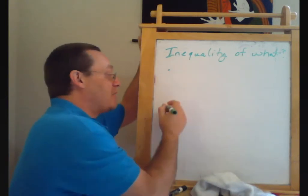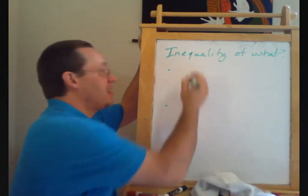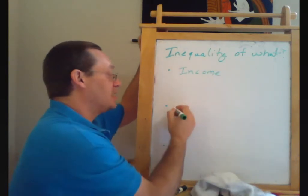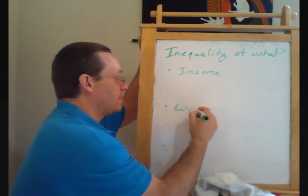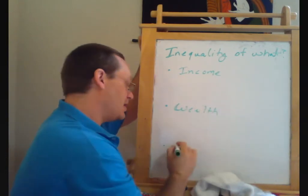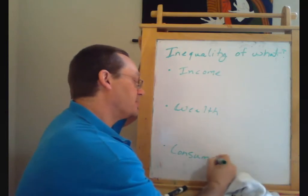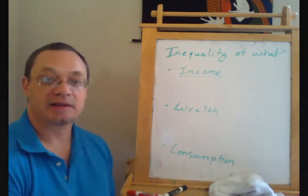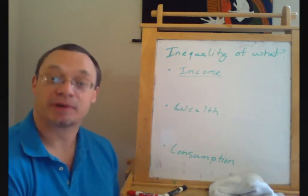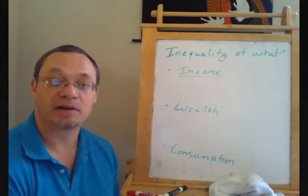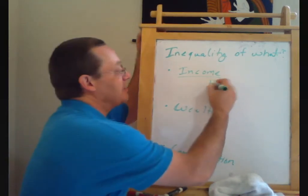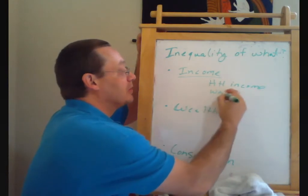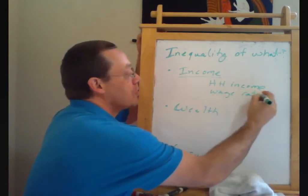The three most common things that people look at are inequality of income, inequality of wealth, and inequality of consumption. For inequality of income, we're looking at typically households, but also sometimes we look at inequality of wage rates — so we could look at household income or we could look at wage rates.